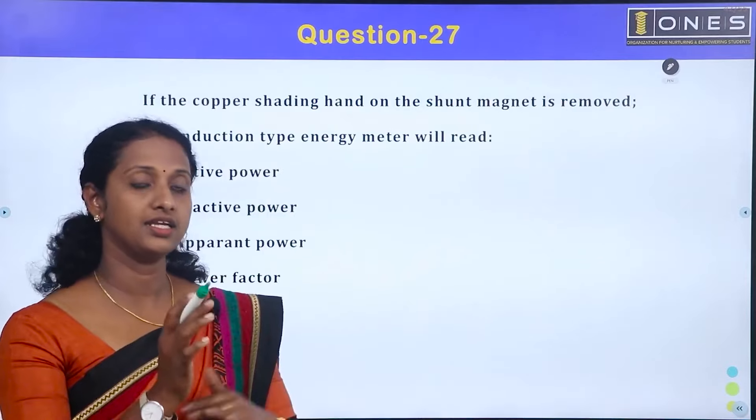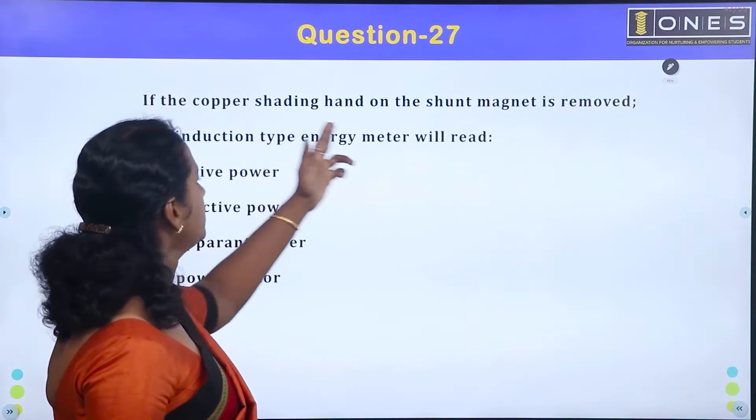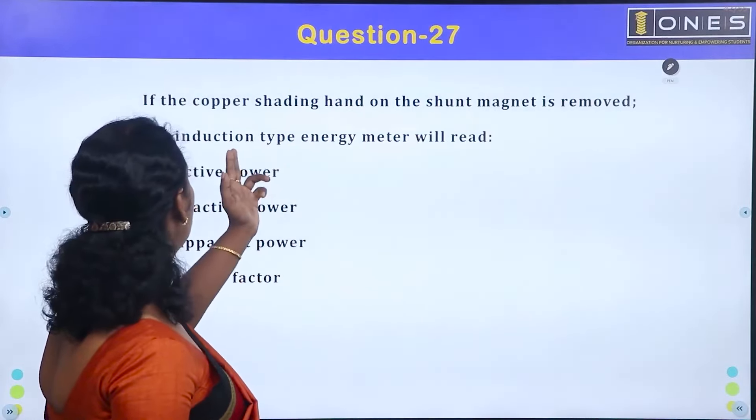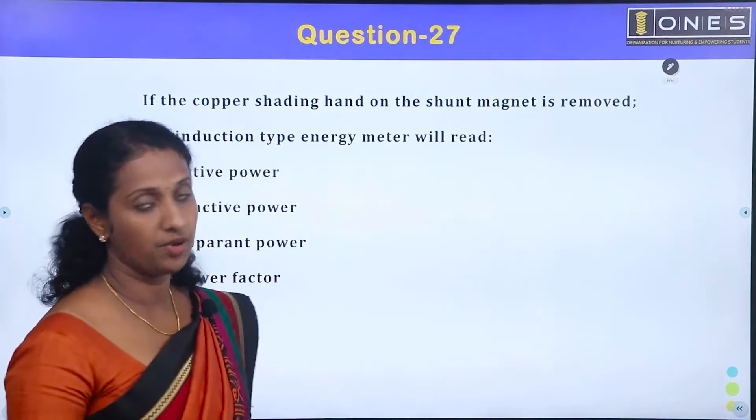So if the copper shading band on the shunt magnet is removed, the induction type energy meter will read the reactive power.